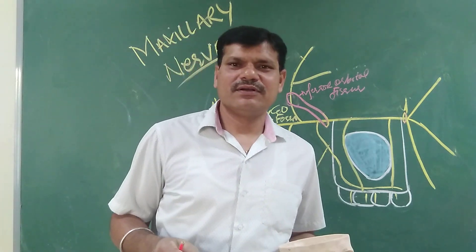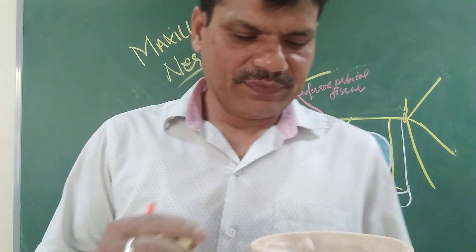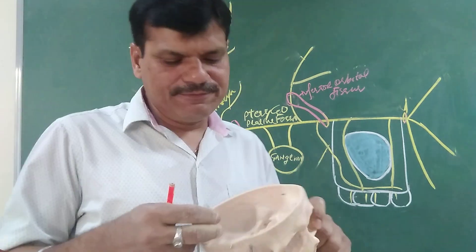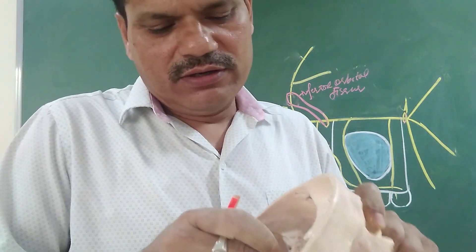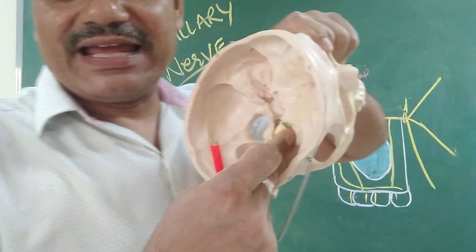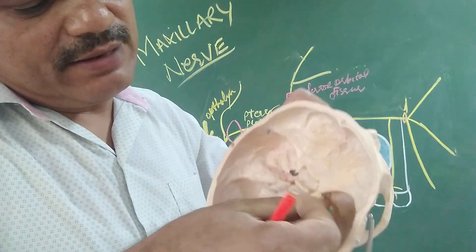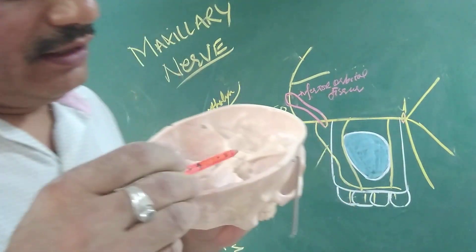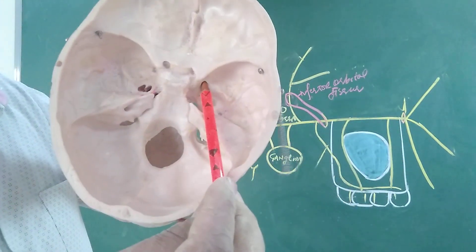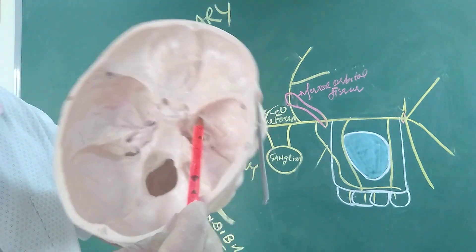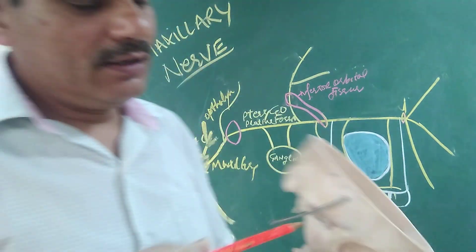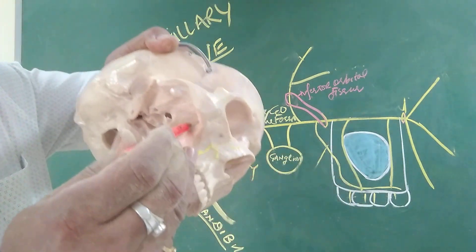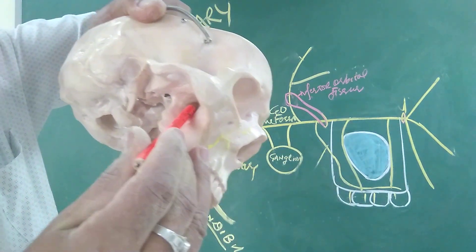The maxillary nerve, which is the branch of the trigeminal nerve arising from the trigeminal ganglion, passes laterally to the cavernous sinus in the middle cranial fossa and then passes through the foramen rotundum. After that it lies in the pterygopalatine fossa.